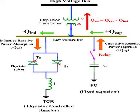Voltage regulation: An SVC can help maintain proper voltage levels in the power grid. It injects or absorbs reactive power as needed to stabilize the voltage and prevent voltage sags or surges.